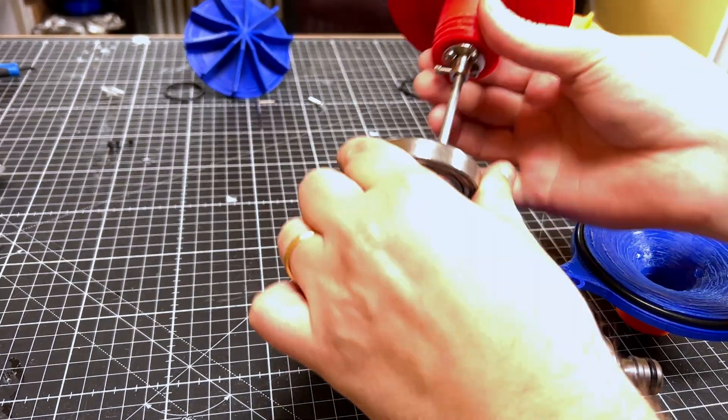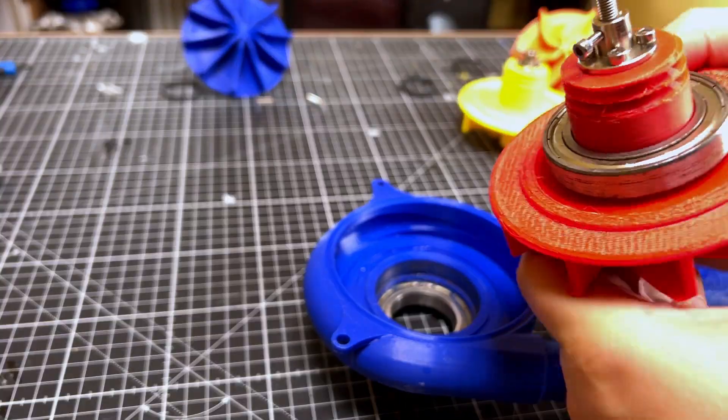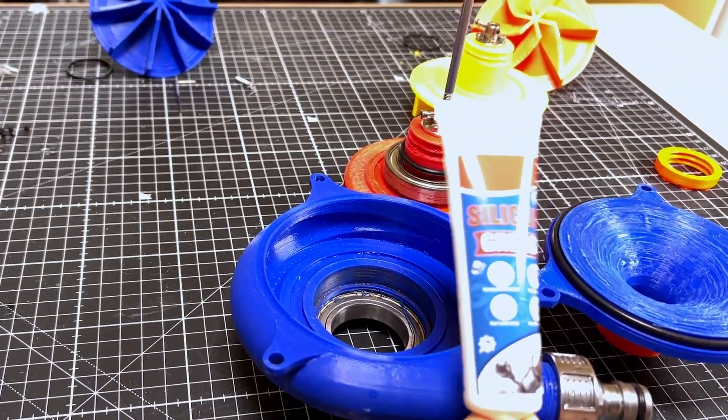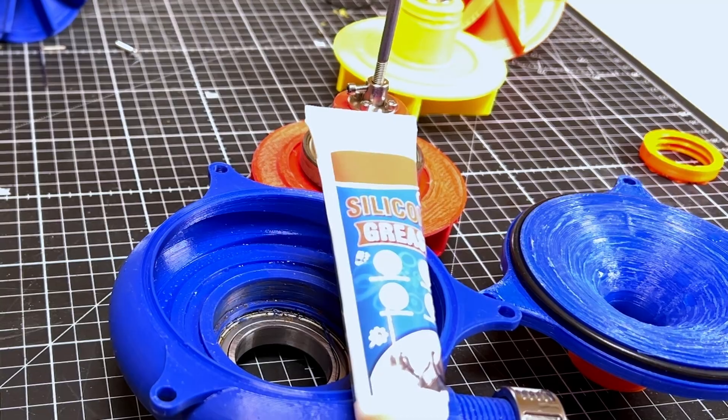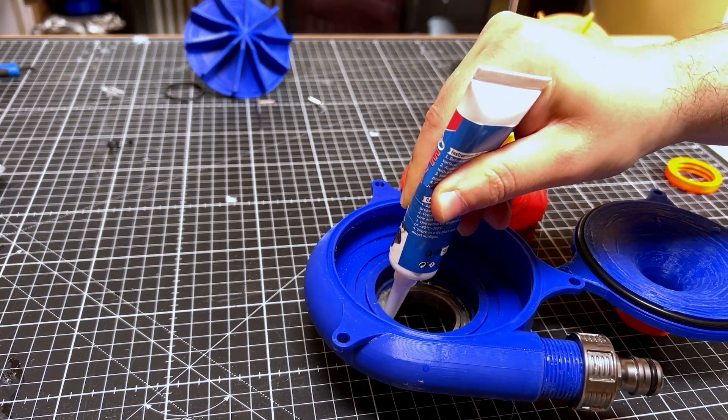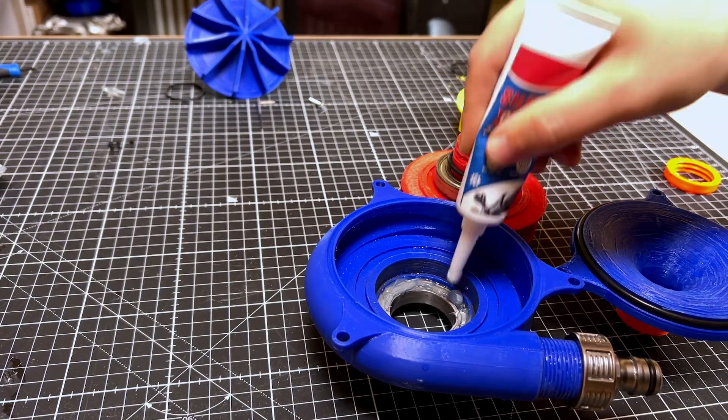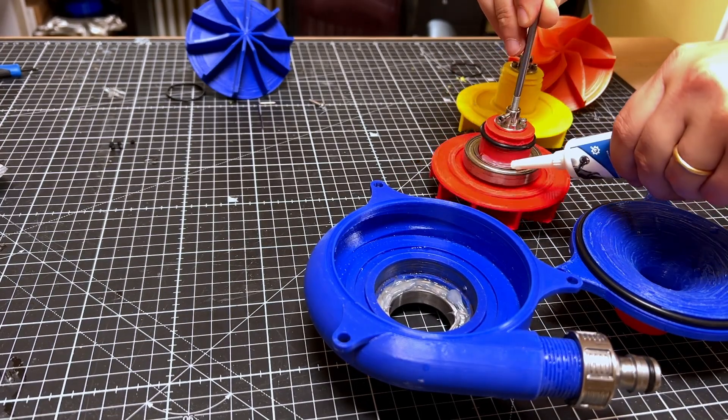I've got one more thing I'd like to try before we try and do the print-in-place pump, and that's try and reduce the amount of leakage out the back of the pump through the bearings. I'm going to place a whole load of silicone grease in between the bearings, and also add an O-ring between the bearings to try and reduce the ability for water to escape.